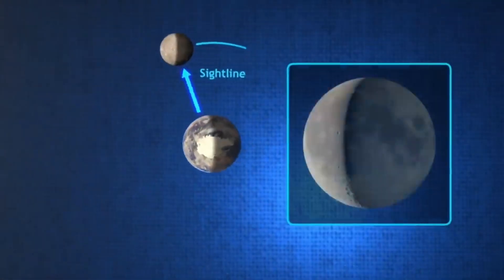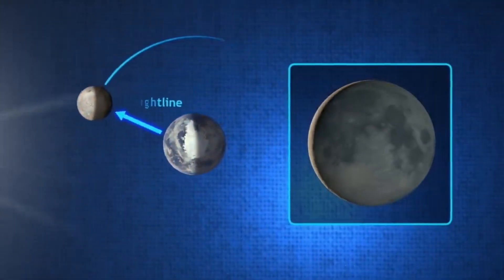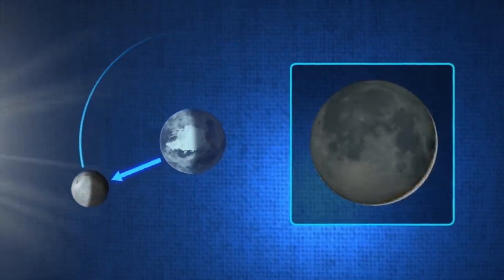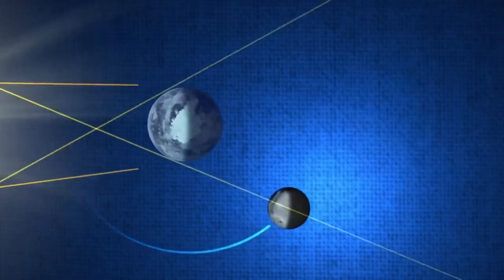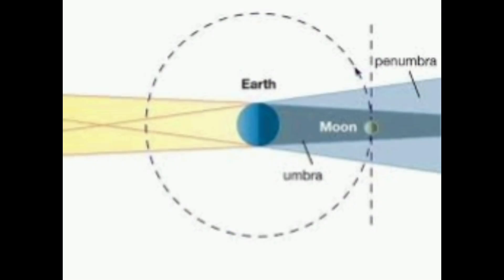But how exactly does math explain the beauty of lunar eclipse? Let's explore. When sunlight falls on earth, our planet blocks some of it, creating shadows. There are two main parts of this shadow.